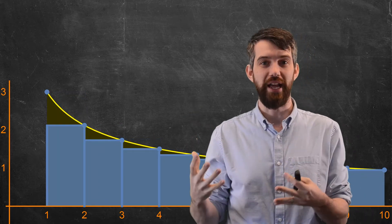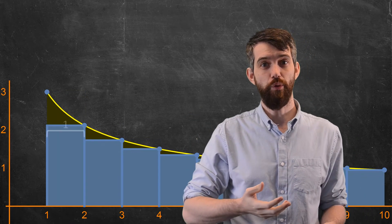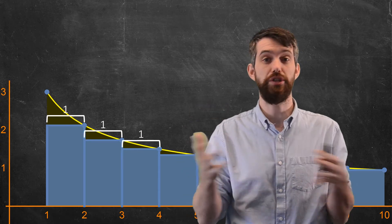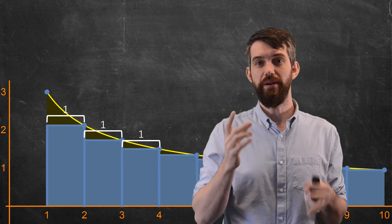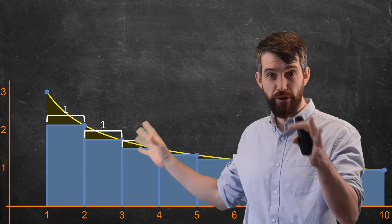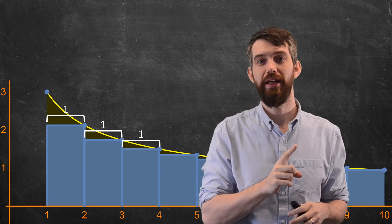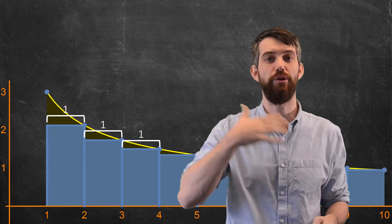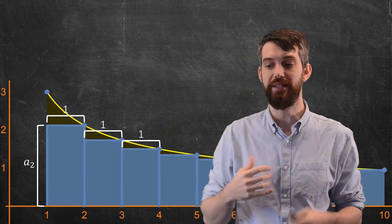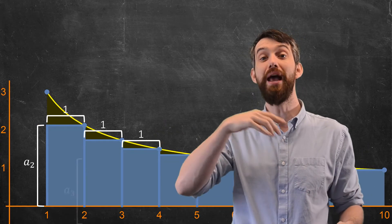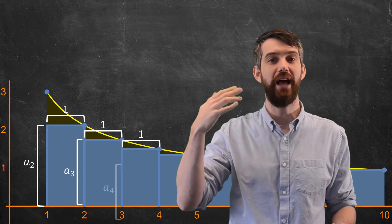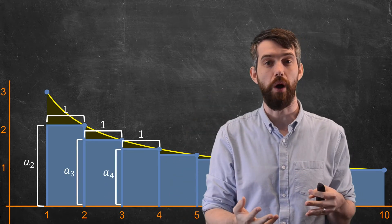That is, all of my rectangles are smaller. Their widths are all the same. Their widths are all just going to be 1. But now if I think about the leftmost, the first rectangle here, its height is not a₁, it's a₂, because I'm using the right endpoint. So the first one has this height of a₂. The second one has a height of a₃. The third one has a height of a₄, and so on.